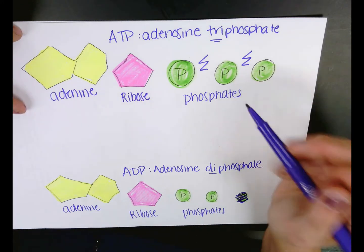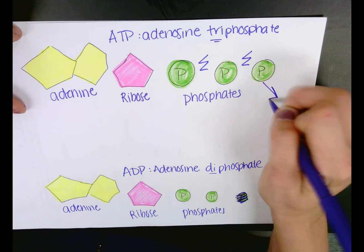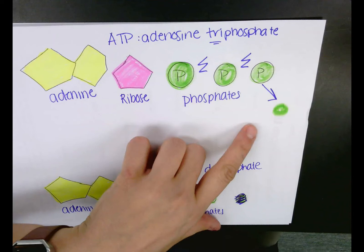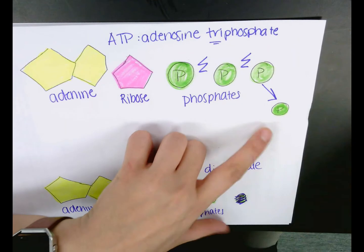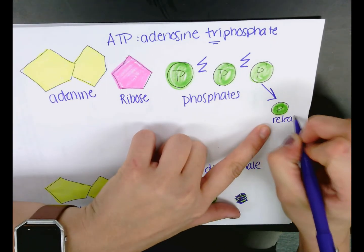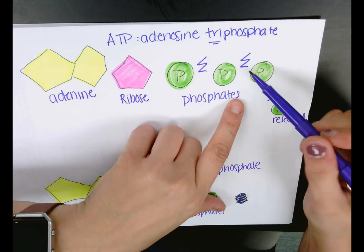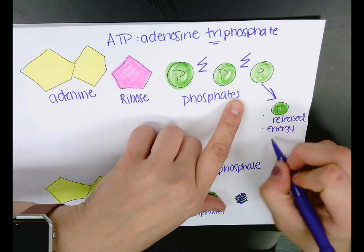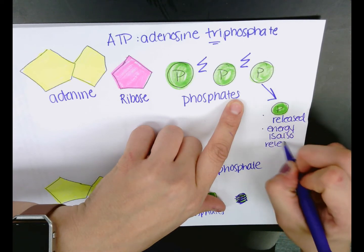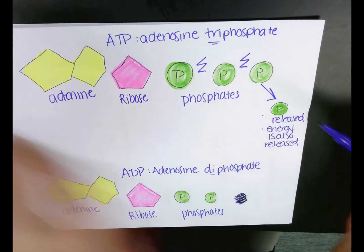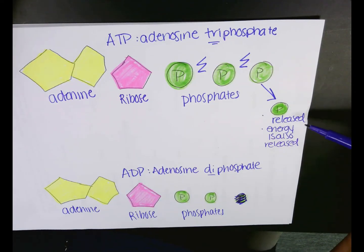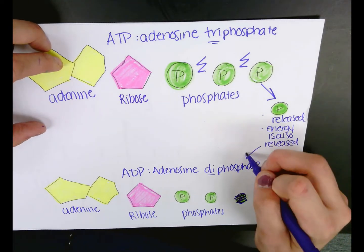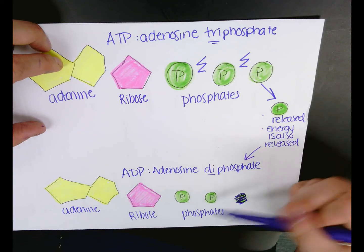In order for us to use ATP, we need to kick one of these phosphates out. One of these phosphates is going to be released, and when that phosphate is released, we release the energy that was stored in that bond. Energy is also released. Once the phosphate is kicked out, we are left with adenosine diphosphate — that's how we get the two phosphates.